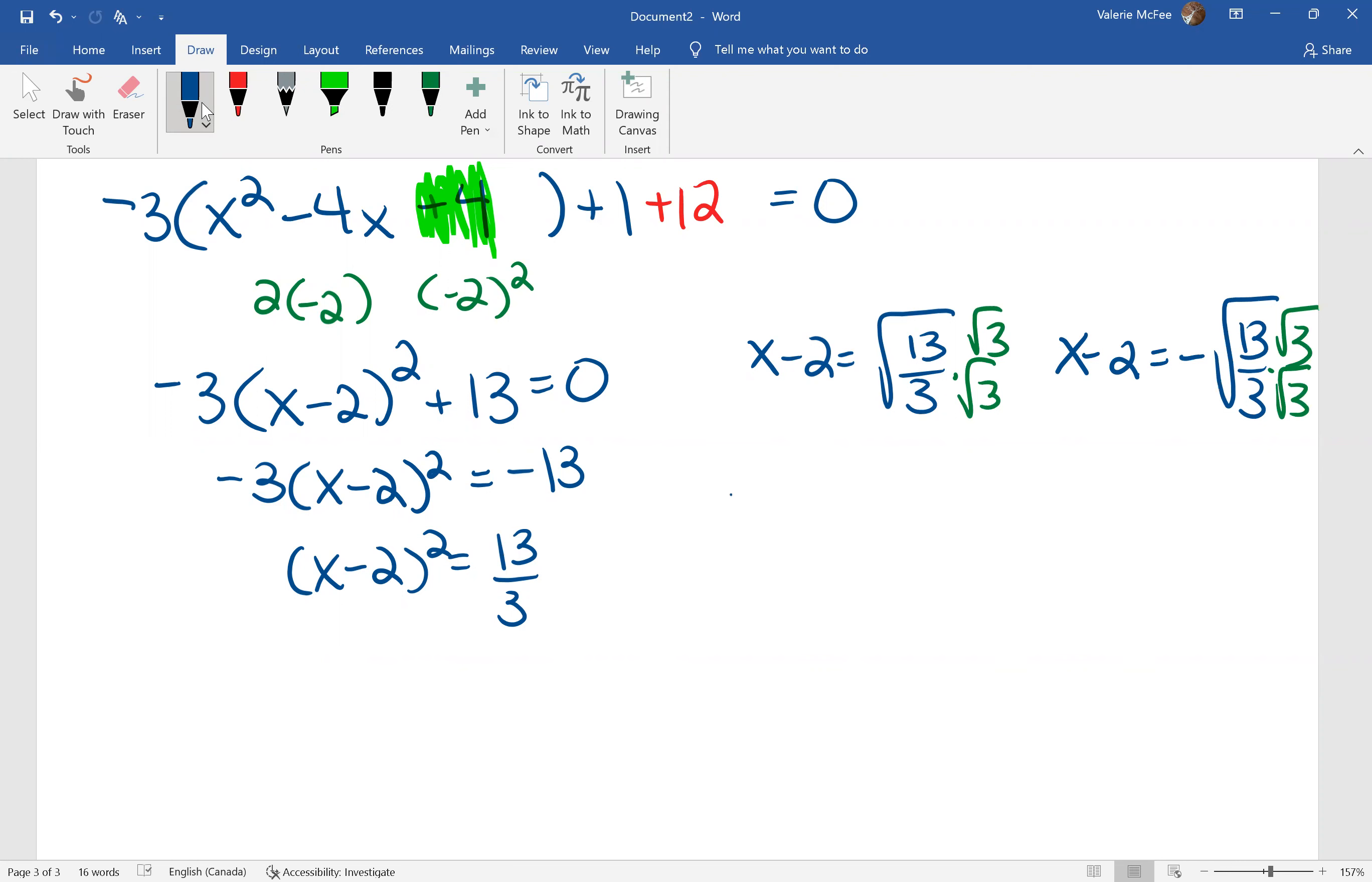And write over a common denominator. Because the denominator is 3, we're going to multiply 2 by 3 over 3, giving us 6 plus or minus the root of 39 all over 3.